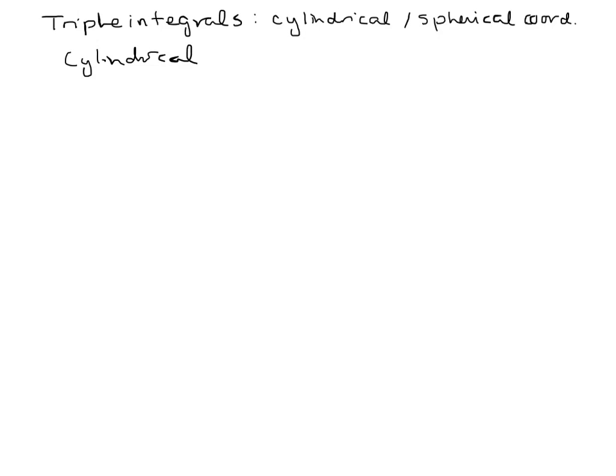For cylindrical coordinates, the triple integral variables — because our cylindrical coordinates are Z, R, and theta — we are going to integrate with respect to Z, R, and theta. Because we have an R and a theta, we want to tack on another R, giving us R dZ dR dtheta, just like we would for a double integral.